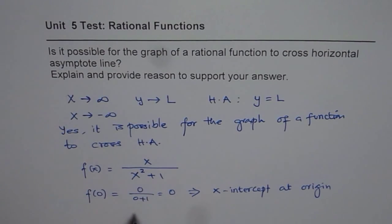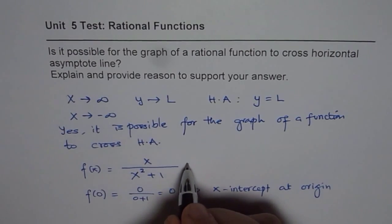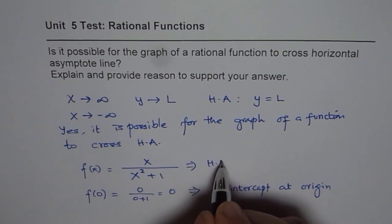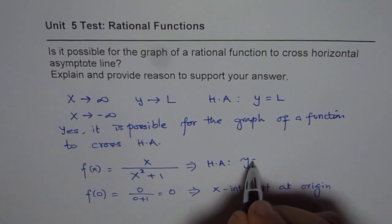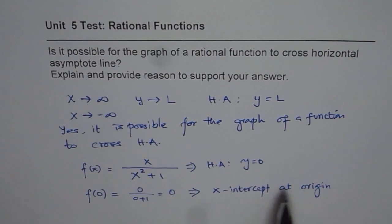Now, what is the equation of horizontal asymptote for this function? This gives you horizontal asymptote at y equals to 0. Now, the origin is on the line y equals to 0. That means the function crosses this.